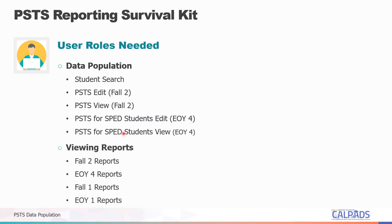LEA users will also need the following report roles. The Fall 2 reports role to view the certifiable CTE completer PSTS survey data. The End of Year 4 reports role to view the certifiable SPED high school completer PSTS survey data. The Fall 1 reports role to generate the ODS report needed to determine the list of prior year high school completers. And the End of Year 1 reports role to generate the subgroup list of CTE pathway completers in the past 3 years who completed high school last year.